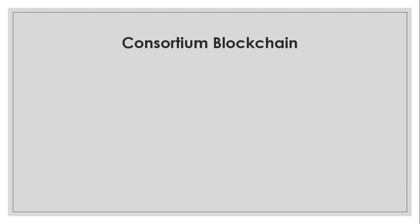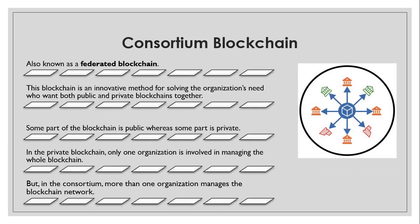The fourth type is consortium blockchain, also known as federated blockchain. It is an innovative method for addressing organizations' need for both public and private blockchain functionality. In consortium blockchain, some parts are public and some are private. Unlike private blockchain where only one organization manages the blockchain, in consortium blockchain more than one organization manages it. It is typically used by financial organizations, governments, and banks.